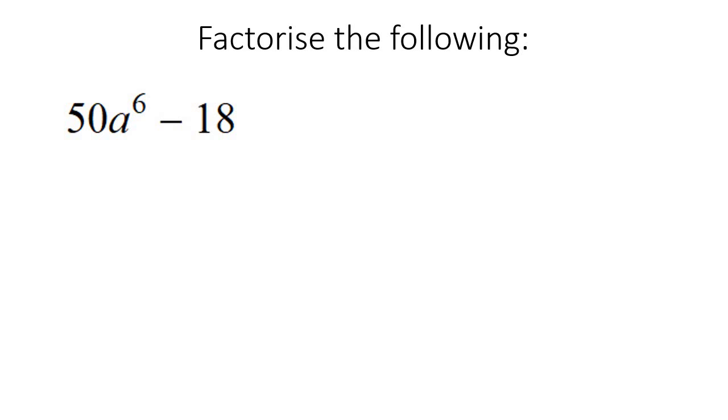And here's our last example for this lesson. So we definitely need to take out a common factor. I think we can go with 2. And then you're going to be left with 25a to the power of 6 over here, and this one you'd be left with 9. So now each of those are perfect squares.